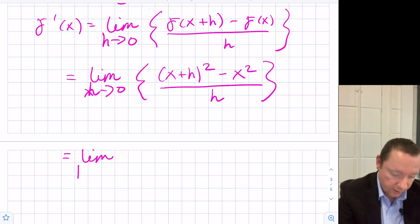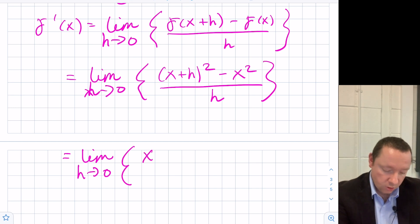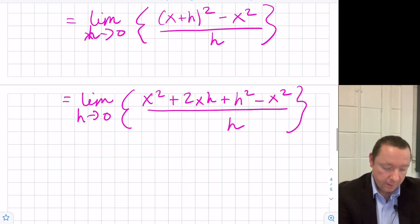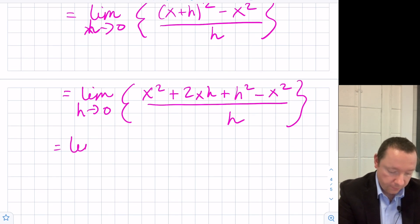So that is the limit as h goes to zero, we can expand the top to get x squared plus 2x h plus h squared minus x squared all over h. We'll try to really eliminate this fraction because we can't divide by zero. So that is the limit as h goes to zero. x squared's cancel, so we get 2x h plus h squared over h.